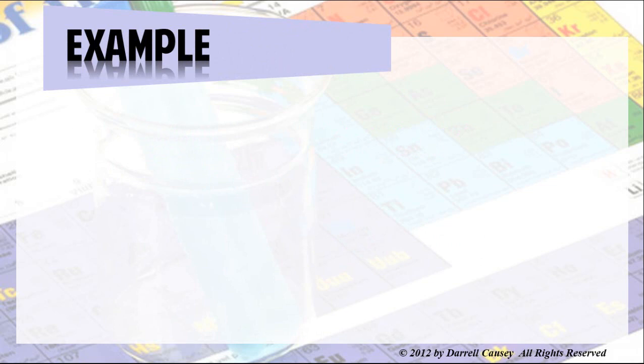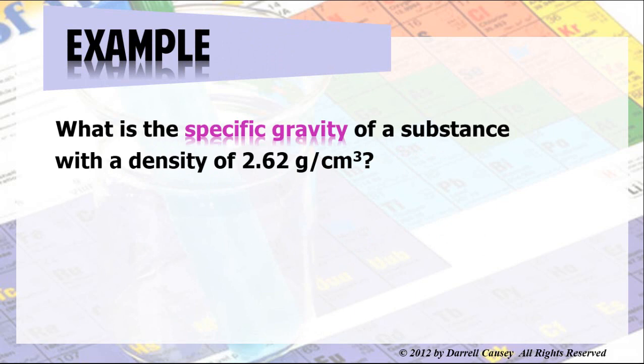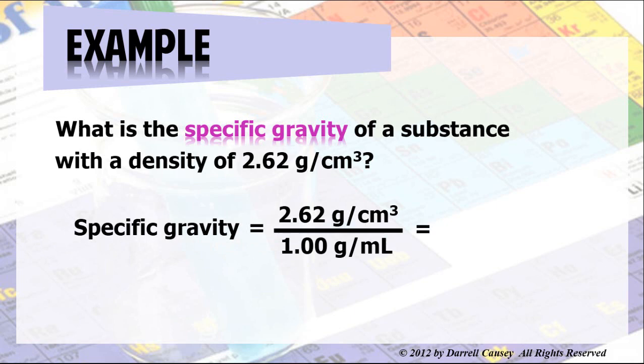And let's do an example. What is the specific gravity of a substance with a density of 2.62 grams per cubic centimeter? Let's set the problem. Specific gravity equals the density divided by that of water. Now, notice here, the units are going to cancel out and we're going to end up with 2.62. That's specific gravity.